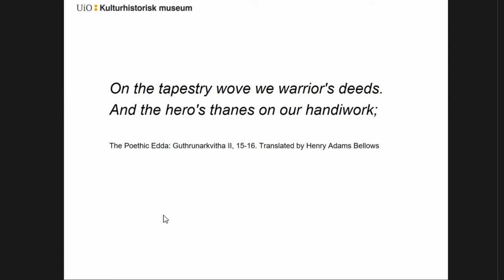So how were these tapestries originally used? The tapestries from Oseberg were found inside a grave mound, inside the grave chamber — some of them were laying on display, but some of them were stored away in a chest. But how were they used before that? Because we know that some of these tapestries are, as I said, much older than the grave.